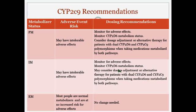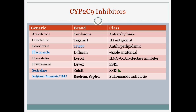Intermediate metabolizers have the same recommendation. Extensive metabolizers need no change because they are at no increased risk for adverse effects. For CYP2C9 inhibitors, Tricor (fenofibrate), which is in the top 200 and used for cholesterol, is on the list, along with fluconazole, sertraline, and sulfamethoxazole, which is available as a combination product with trimethoprim — the antibiotic known by brand names such as Bactrim.